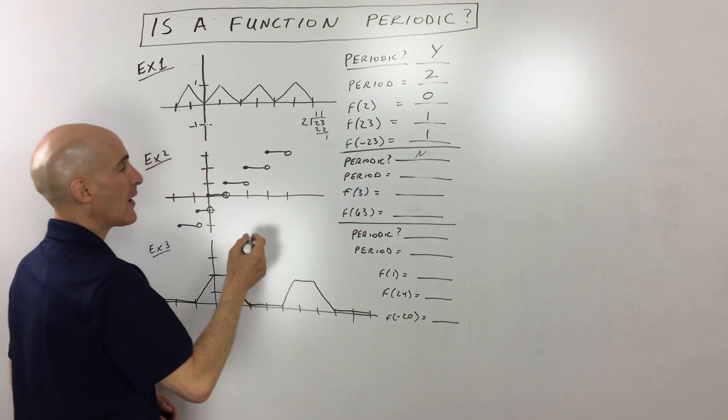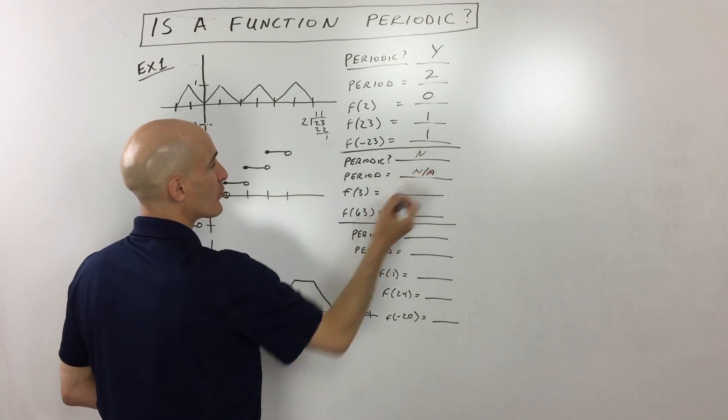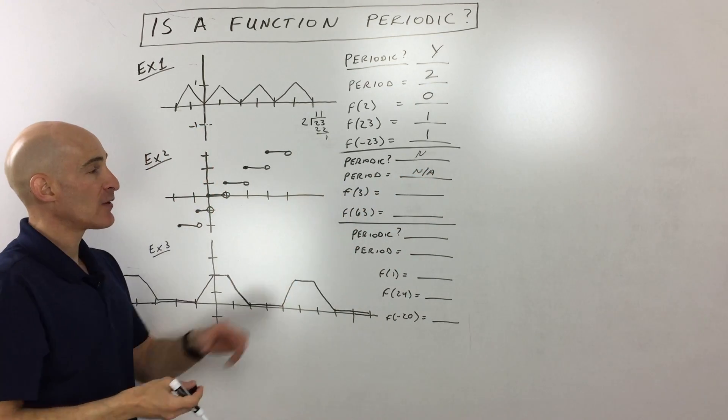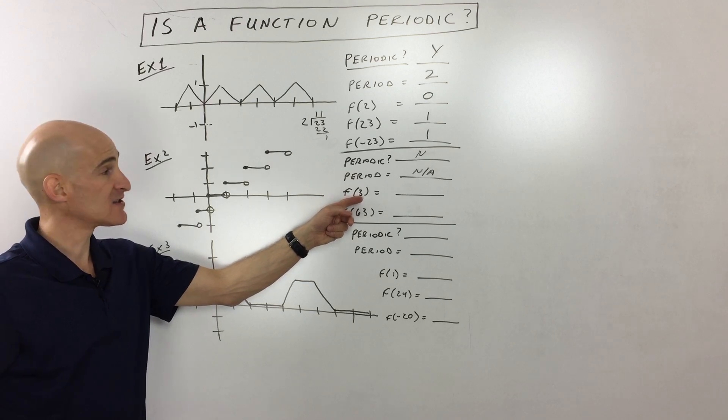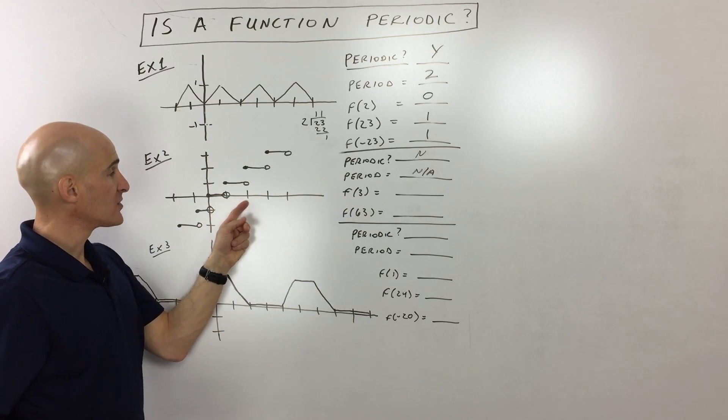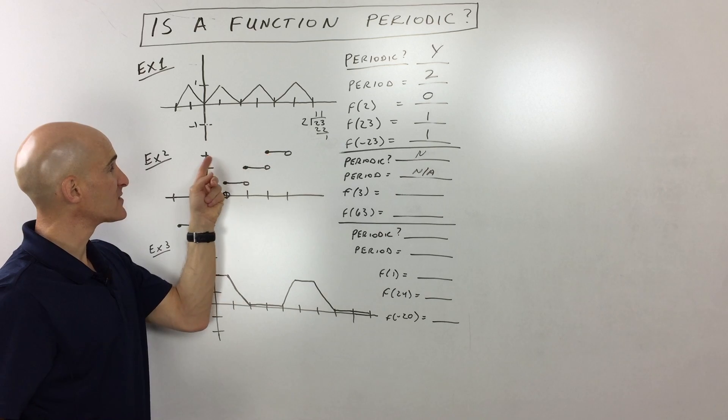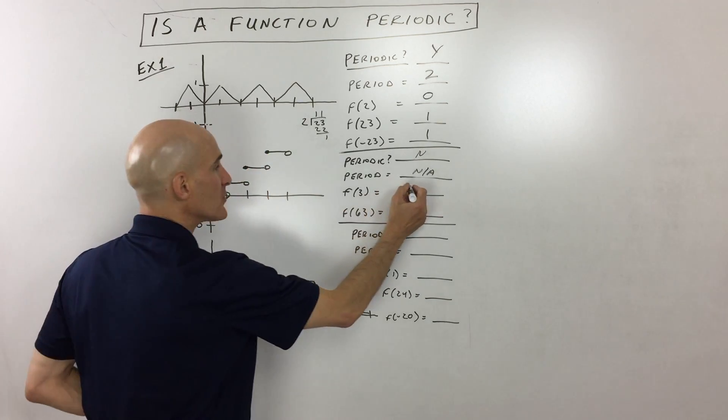So this one is actually not periodic. We'll just put no for that one. And the period is just not applicable, right, n/a. But we can still calculate what these function values are. So when x is three, one, two, three, we go up to the graph, what's the y value? You can see the y value is three.